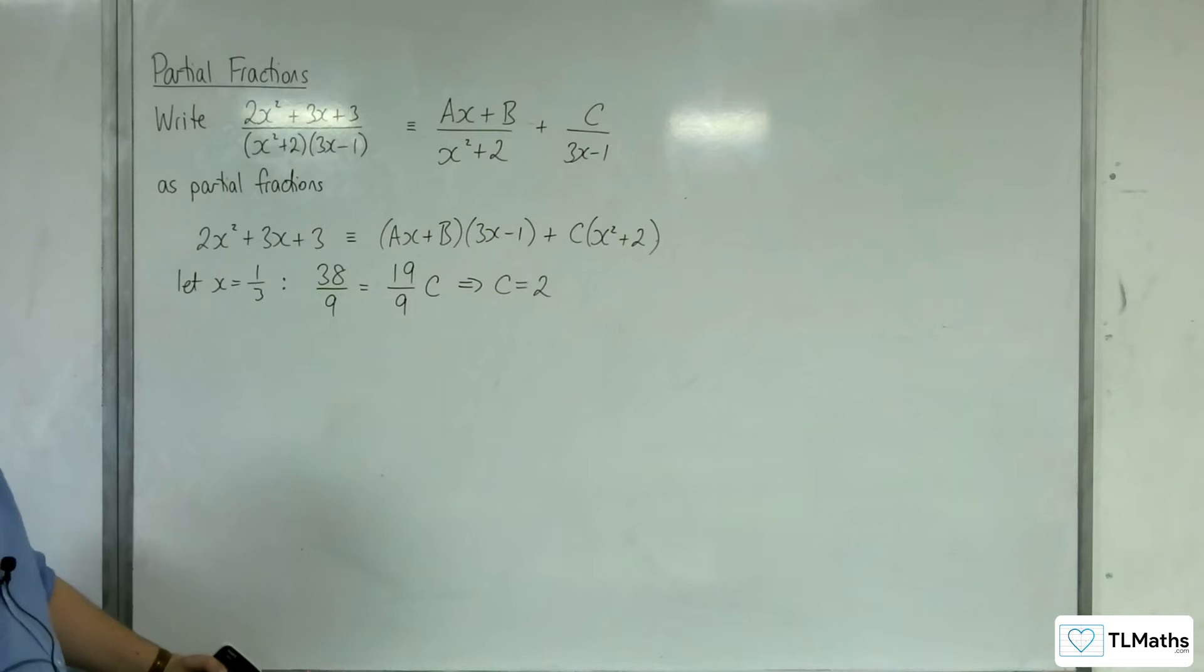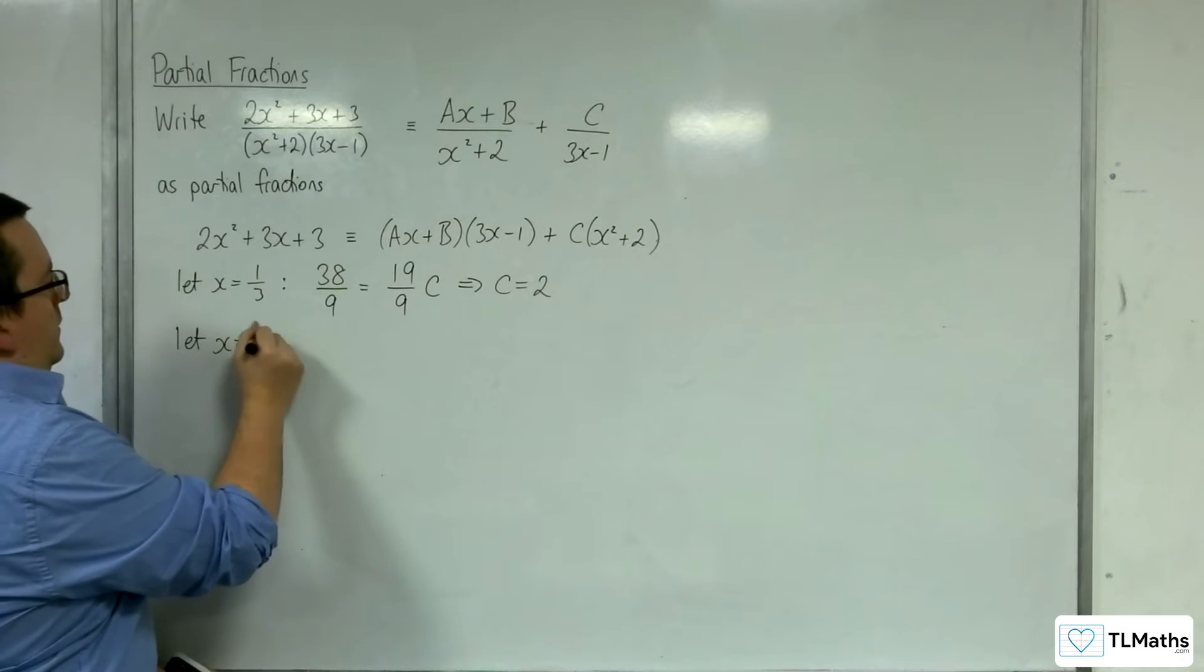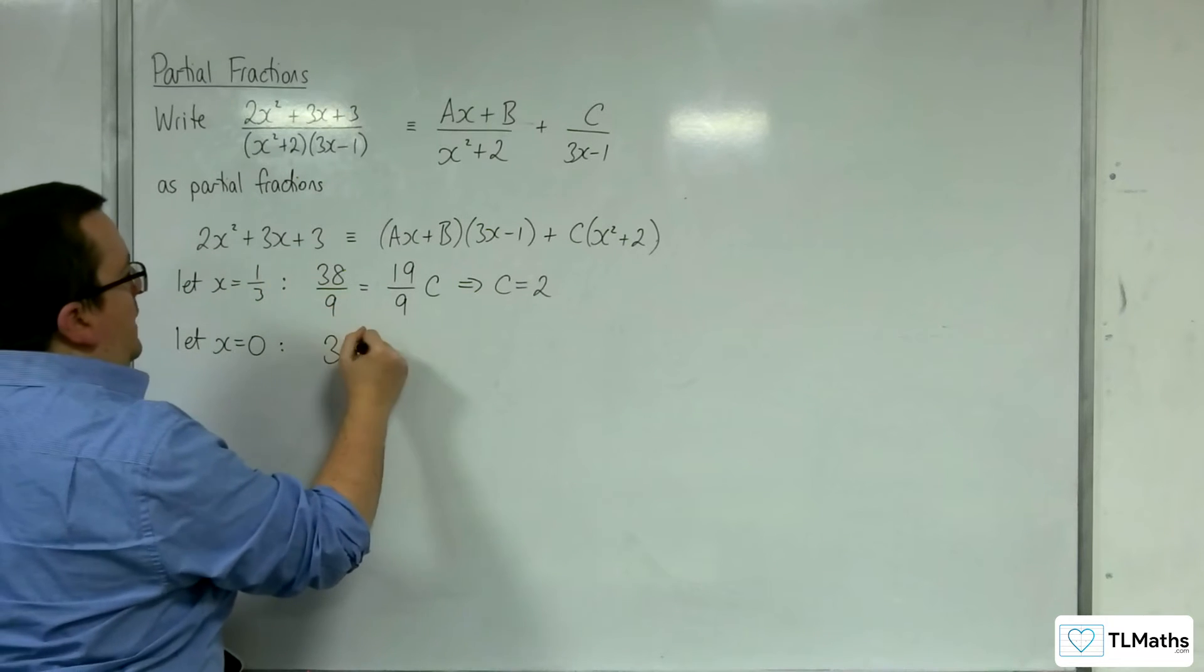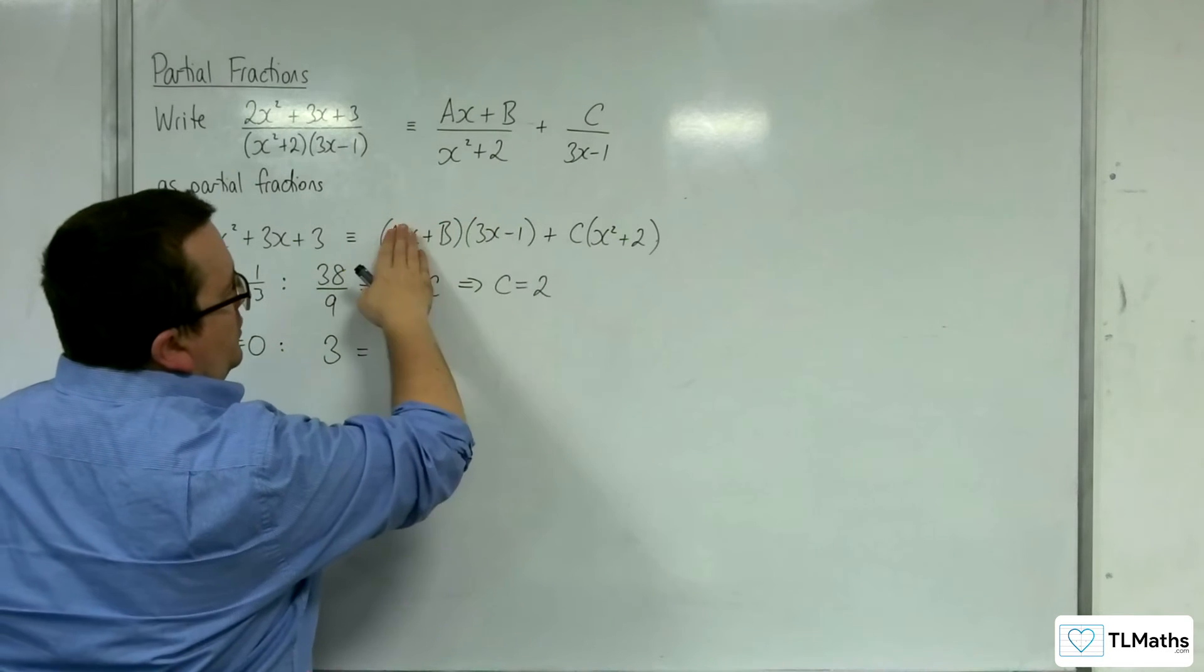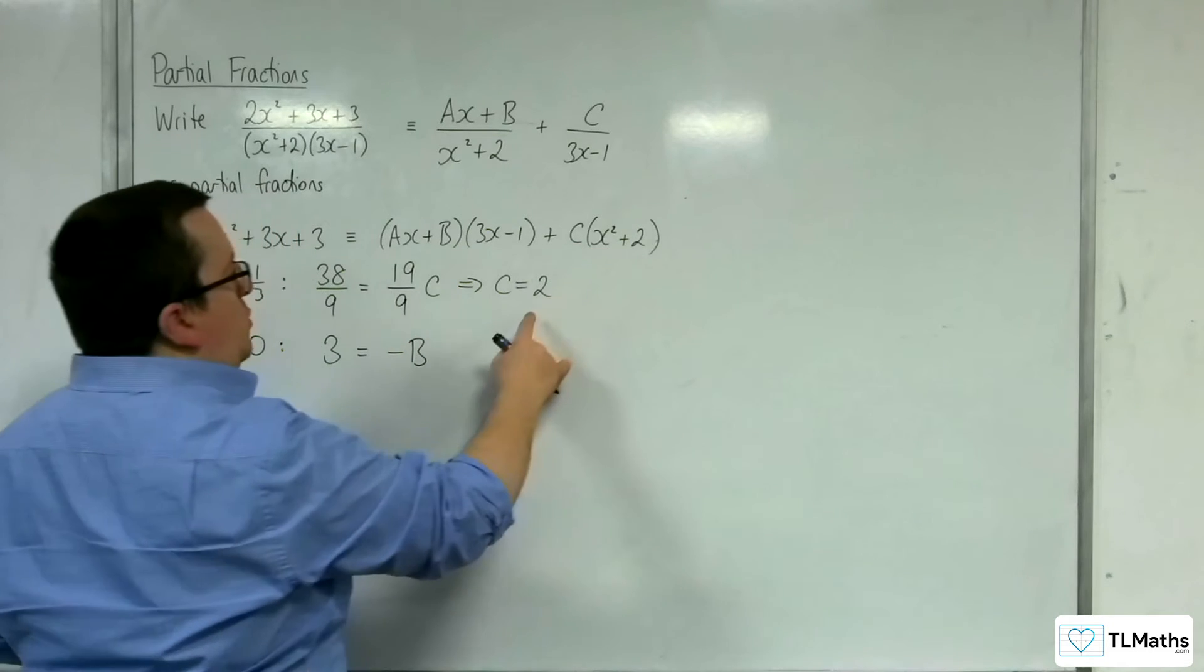So now that we've got c, if we substitute in x equals 0 next, that'll make my life a bit easier. I'm going to have 3 on the left-hand side. We're going to have 0 there times 0. So b times minus 1, so minus b. And then we're going to get c times 2.